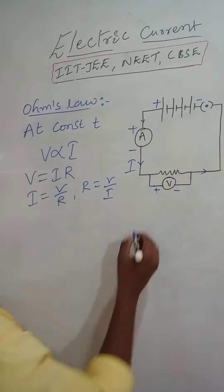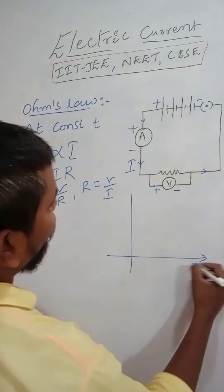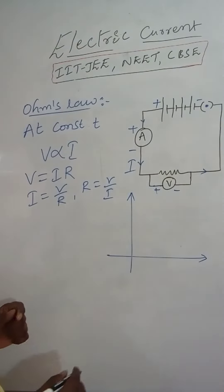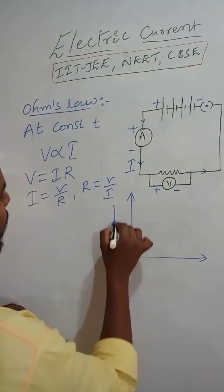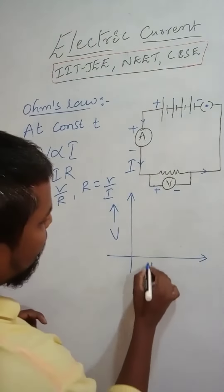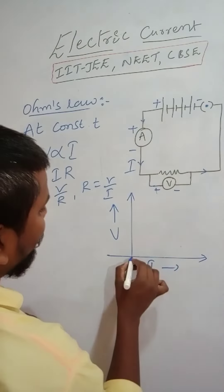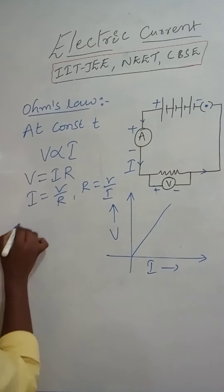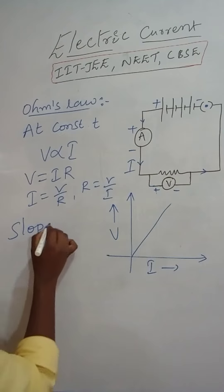If you draw the graph for VI, V on Y axis, I on X axis, it will be straight line. That is not the matter. Slope of VI graph is straight line.